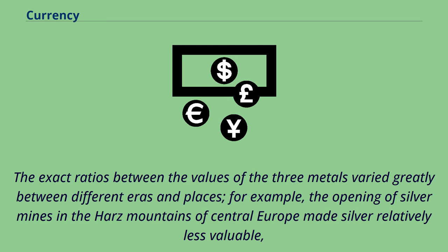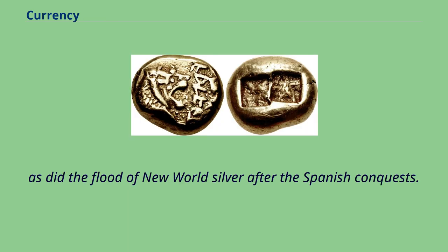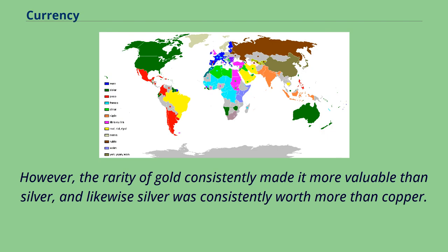The exact ratios between the values of the three metals varied greatly between different eras and places. For example, the opening of silver mines in the Hartz Mountains of Central Europe made silver relatively less valuable, as did the flood of New World silver after the Spanish conquests. However, the rarity of gold consistently made it more valuable than silver, and likewise silver was consistently worth more than copper.